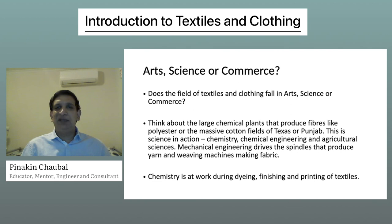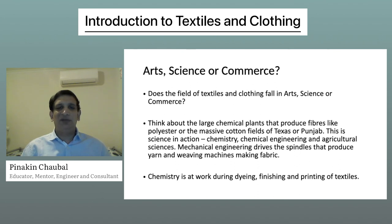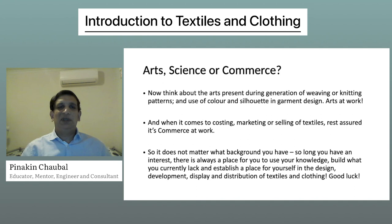Does the field of textiles and clothing fall in arts, science or commerce? Think about the large chemical plants that produce fibers like polyester, or the massive cotton fields of Texas or Punjab — this is science in action: chemistry, chemical engineering and agricultural sciences. Mechanical engineering drives the spindles that produce yarn and weaving machines making fabric. Chemistry is at work during dyeing, finishing and printing of textiles. And think about the arts present during generation of weaving or knitting patterns and use of color and silhouette in garment design — arts at work.